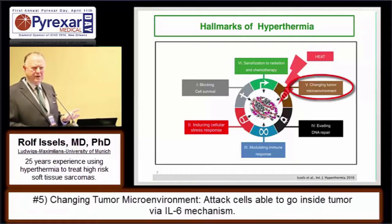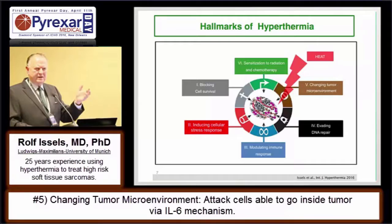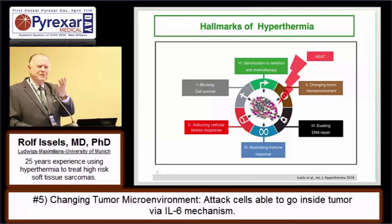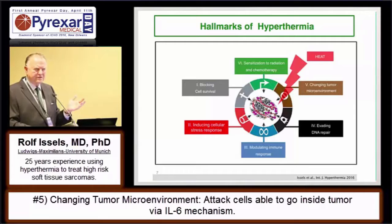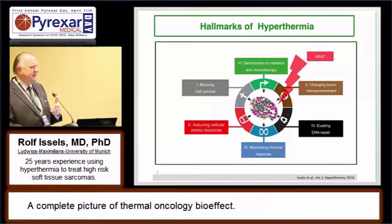The last effect is the microenvironment, which may be the most important part. When I see Betsy Viparsky or Sean showing this kind of immune response more in the tumor microenvironment — that you create an atmosphere, a milieu by heat, where cells go to the tumor and possibly inside the tumor by an IL-6-dependent mechanism, very interestingly shown by this group — the whole picture becomes very complete. These effects should be kept in mind whenever you use heat in the context of chemotherapy or radiation.